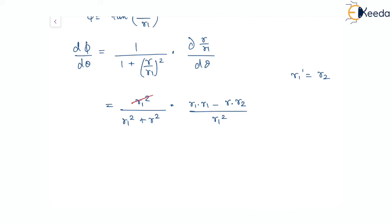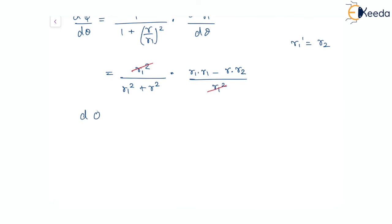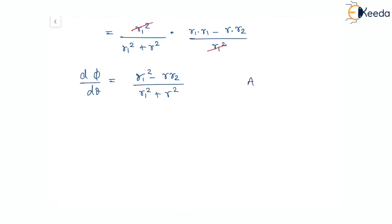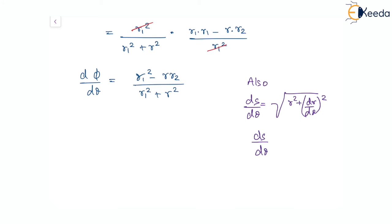The r₁² terms cancel, giving dφ/dθ = (r₁² - r·r₂)/(r₁² + r²). This is equation 2. We also know that for a polar curve, the arc length derivative is ds/dθ = √(r² + (dr/dθ)²) = √(r² + r₁²). This is equation 3.